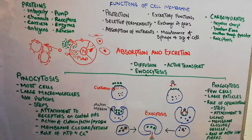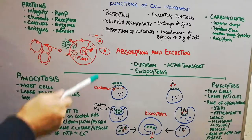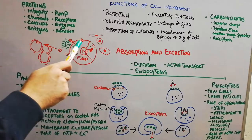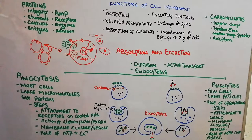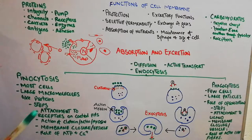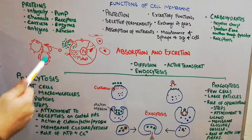Then the waste is thrown out. That's all about the functions of the cell membrane. To summarize: the cell membrane, or plasma membrane, is made of two layers of lipids known as the lipid bilayer, interspersed within which are proteins and carbohydrates — integral proteins, peripheral proteins — which may act as receptors for different substances.